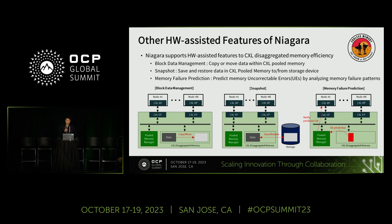The second hardware-assisted feature is snapshot, a function that directly saves or restores data between CXL disaggregated memory and a storage device. We found that host CPU I/O handling burden can be reduced by offloading the snapshot function to the memory device. The third is memory failure prediction — since CXL disaggregated memory connects multiple hosts, a memory failure can have a significant negative impact on the system, so failure prediction can improve reliability.